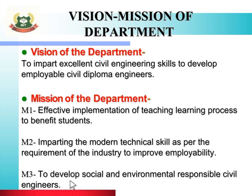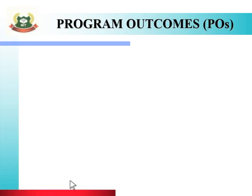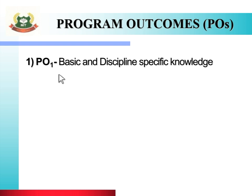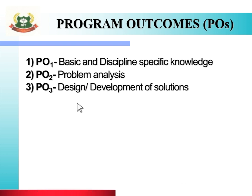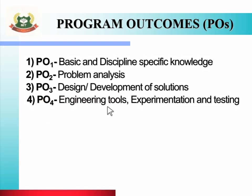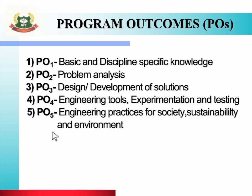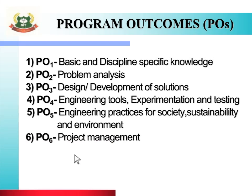To achieve this vision and mission, there are seven program outcomes. PO 1 is basic and discipline specific knowledge. PO 2 is problem analysis. PO 3 is design development of solutions. PO 4 is engineering tools, experimentation and testing. PO 5 is engineering practices for society, sustainability and environment. PO 6 is project management.